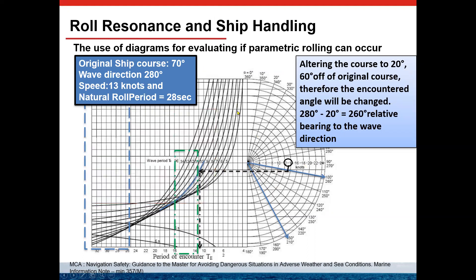Altering course further to achieve a relative angle of around 280 degrees gives a period of encounter of approximately 9.5 seconds. This puts us clearly outside the parametric rolling dangerous zone.